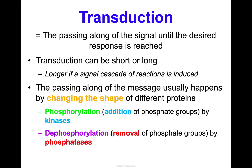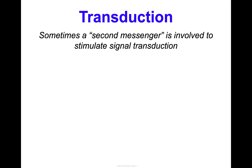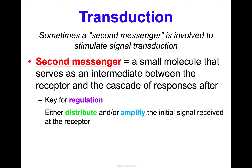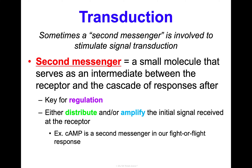One more thing about transduction: sometimes there's a second messenger involved in stimulating the transduction of a signal. A second messenger is a small molecule that serves as an intermediate between the receptor protein and the cascade of responses that follow. These secondary messengers either distribute a signal or can amplify the initial signal. A key example is cAMP — cyclic AMP — a secondary messenger important in your fight-or-flight response, involving epinephrine and adrenaline hormones.